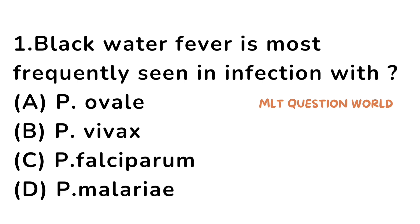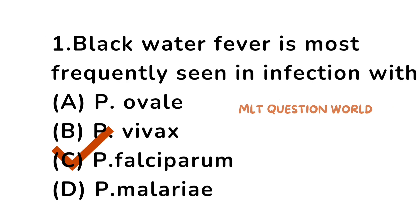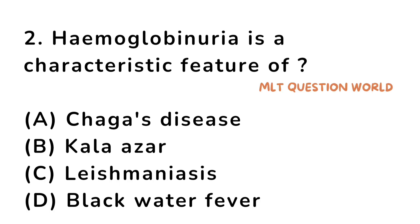Question number 1. Blackwater fever is most frequently seen in infection with: option A. Plasmodium ovale, option B. Plasmodium vivax, option C. Plasmodium falciparum, option D. Plasmodium malaria. The right answer is option C, Plasmodium falciparum. Blackwater fever is most frequently seen in infection with Plasmodium falciparum.